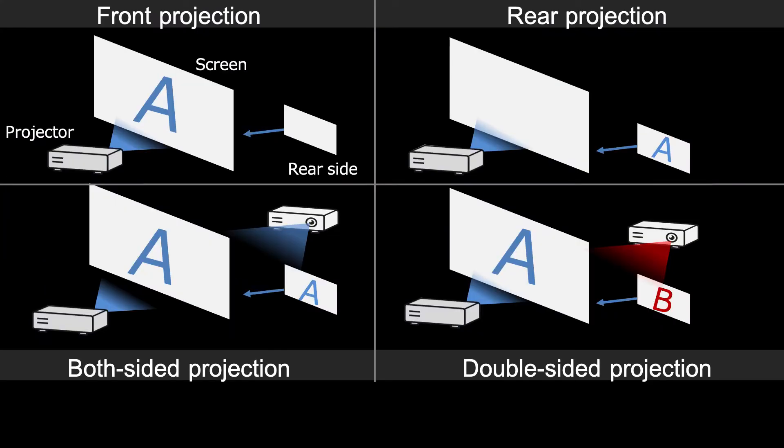Projection methods can be roughly classified into four categories. The first is the front projection. It is the method to project images on the front of the screen using an opaque screen and the projector.